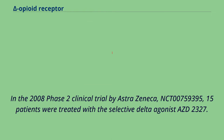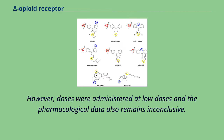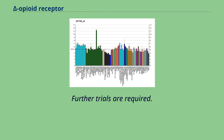In the 2008 Phase 2 clinical trial by AstraZeneca, CT00-759395, 15 patients were treated with the selective Delta agonist AZ-2327. The results showed no significant effect on moods, suggesting that Delta Opioid Receptor modulation might not participate in the regulation of mood in humans. However, doses were administered at low doses and the pharmacological data also remains inconclusive. Further trials are required.